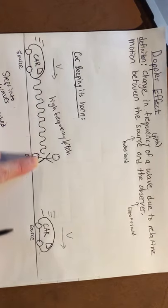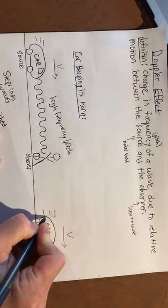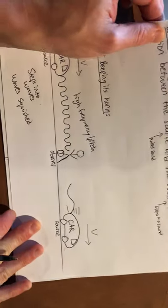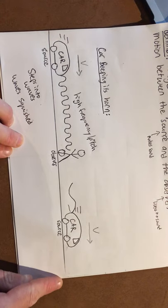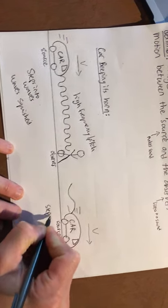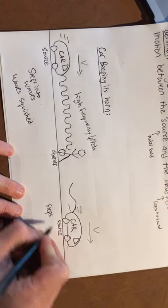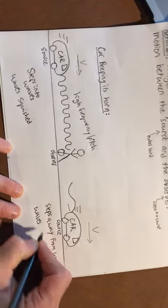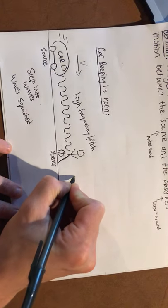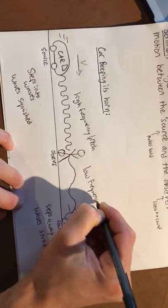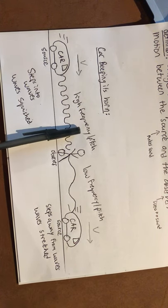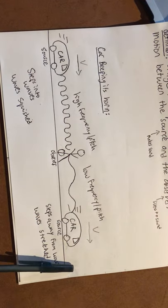After the car passes, you can hear the pitch go down. Every time the car produces a wave, instead of stepping into the waves, the car is now stepping away from the wave. So the waves don't get squished — instead they get stretched. Stretched waves look spread out and sound like a low frequency or pitch. So when the car steps into the waves it's making, you get a high frequency or pitch; when it steps away, you get a low frequency or pitch.